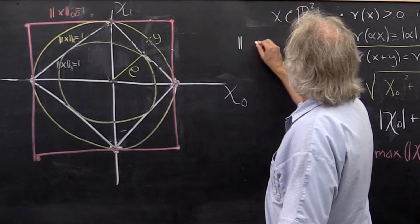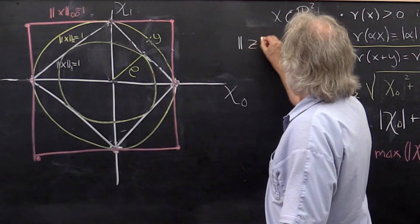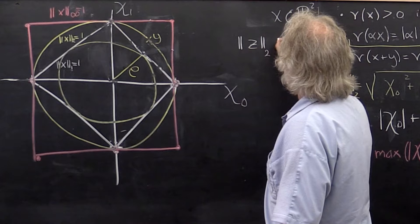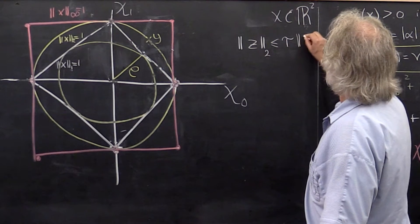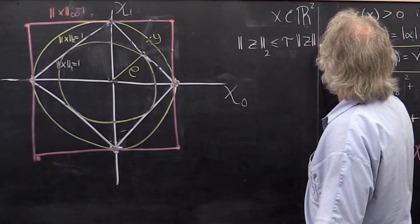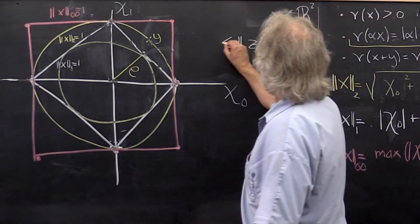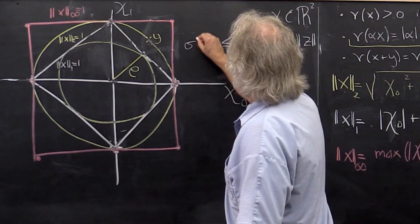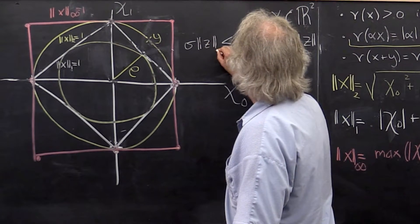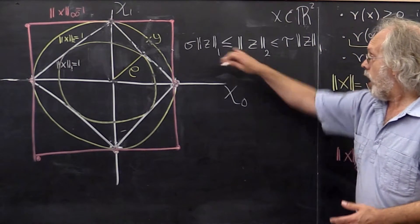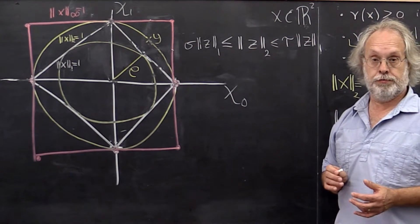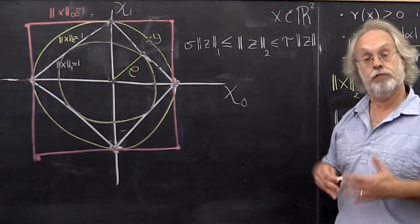What we would like to show is that for any vector z, the 2-norm is bounded above by some constant times the 1-norm of that vector and bounded below by some other constant times the 1-norm of that vector for arbitrary choices of vector z, for all z.